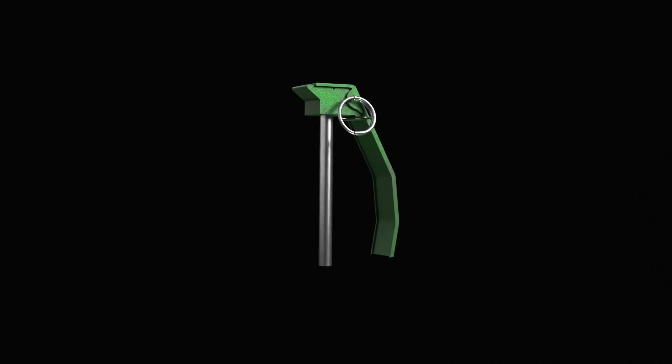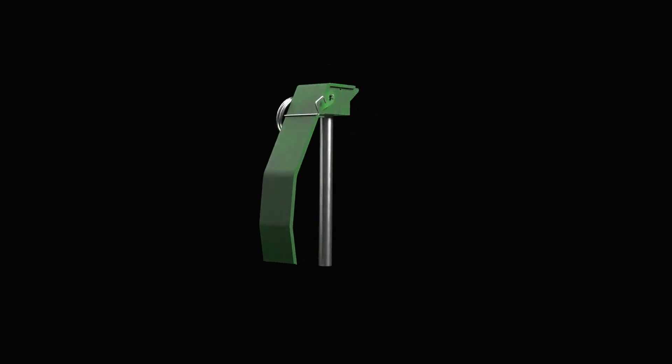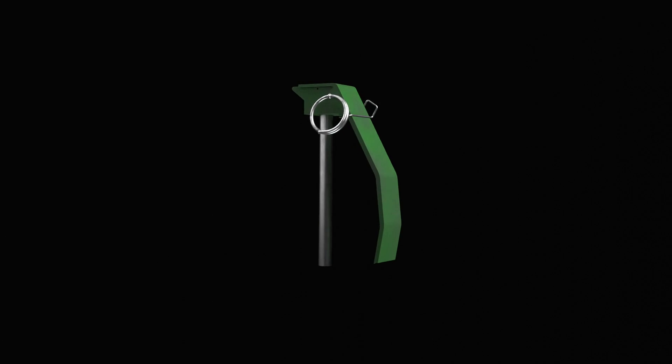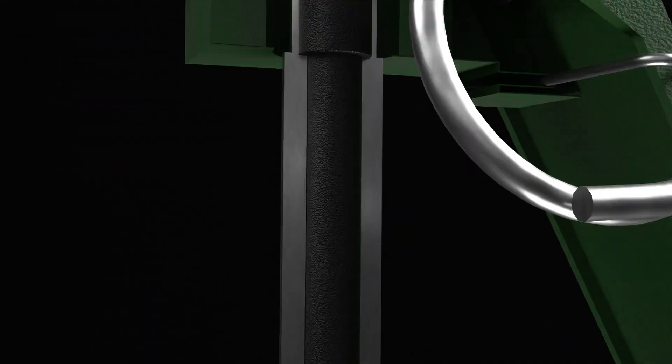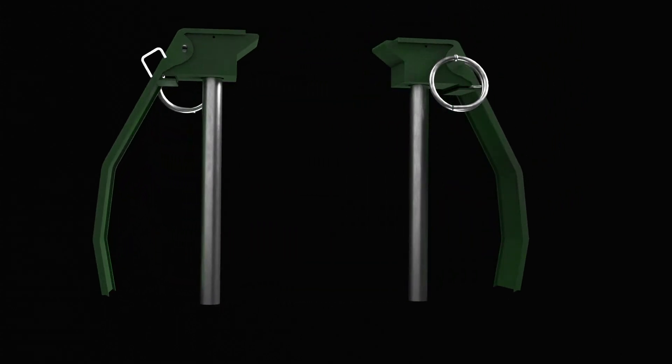Next, we have the fuse assembly. This component is critical as it controls the timing of the explosion. The fuse assembly consists of several parts: the primer, the delay element, and the detonator. Grenade fuses come in two types: time-delay fuse and impact fuse.